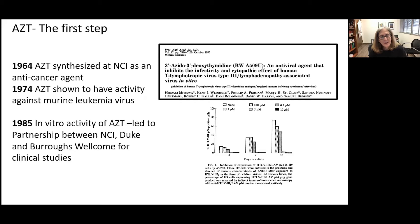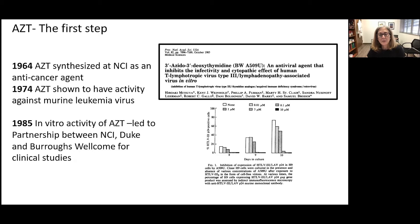AZT, the di-deoxythymidine, was the first agent shown to have in vitro activity against this new virus. It was first synthesized at the National Cancer Institute in 1964 as an anti-cancer drug, and in 1974 was shown to have activity against the murine leukemia virus. This led Sam Broder and colleagues at the NCI to investigate it, and its activity against HIV was demonstrated in 1985. This led to a partnership between investigators at NCI, at Duke, and at Burroughs Welcome.